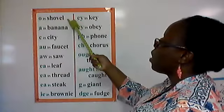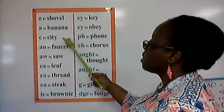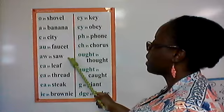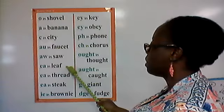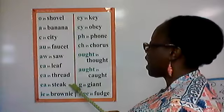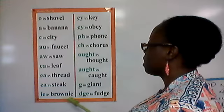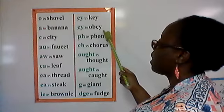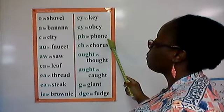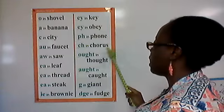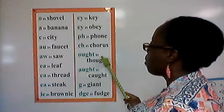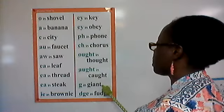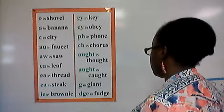Let's go through that one more time together. Ready? 'a' in shovel — O; 'a' in city — C; 'a' in faucet — A-U; 'a' in saw — A-W; 'e' in leaf — E-A; 'e' in thread — E-A; 'a' in steak — E-A; 'e' in brownie — I-E; 'e' in key — E-Y; 'a' in obey — E-Y; 'f' in phone — P-H; 'k' in chorus — C-H; ought in thought — O-U-G-H-T; ought in caught — A-U-G-H-T; 'j' in giant — G; 'j' in fudge — D-G-E.